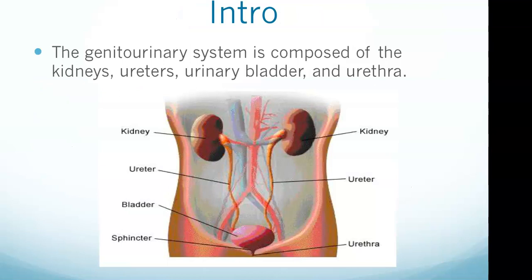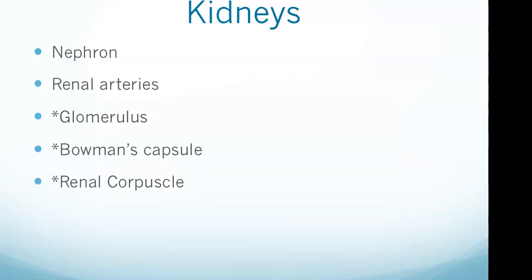The system is composed of the kidneys, ureters, urinary bladder, and urethra. The kidneys filter blood to remove waste products and maintain fluid balance, and produce urine. Urine flows into the renal pelvis, then into the ureters, which transfer it to the urinary bladder where it is stored until released through the urethra.